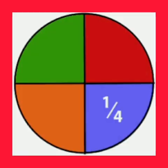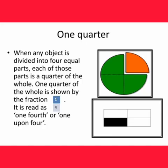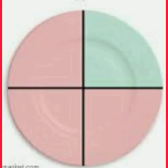Let's learn about one quarter. When an object is divided into four equal parts, each of those parts is a quarter of the whole. One quarter of the whole is shown by the fraction 1 upon 4. It is read as one fourth or 1 upon 4. Let's see some examples: quarter of a plate, quarter of an apple.